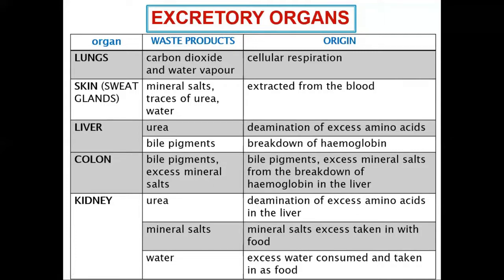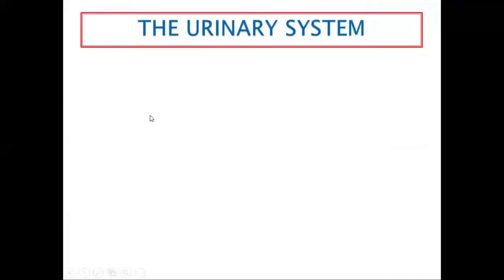Excess salts are removed from the body. Excess water consumed is also removed — if you drink a lot of water, the excess is excreted. You can tell how hydrated you are by the color of your urine. If it is yellowish or darker, you don't have enough water and more is being reabsorbed. If it is colorless, you have too much water and it is being excreted as urine.